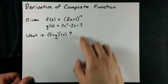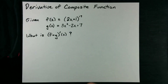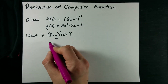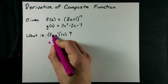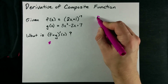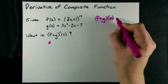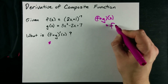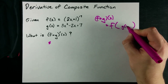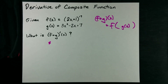How do you take the derivative of a composite function? It's really easy. The way that you deal with a composite function is by knowing that f of g of x is defined as f of x whenever you plug g in for the x value in f.